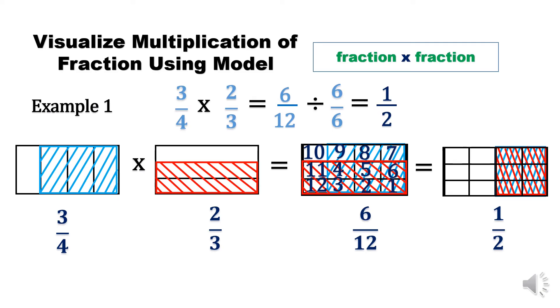So when we multiply 3/4 times 2/3 equals 6/12, which in lowest terms is 1/2.